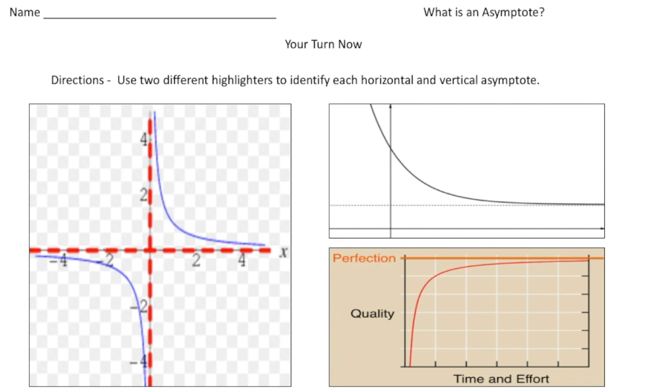Welcome back. Let's see how you did with these practice problems. It says use two different highlighters to identify each horizontal and vertical asymptote.